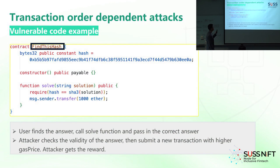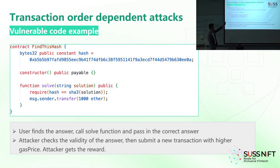So this contract name is FindThisHash. We have a hash here, and we're trying to get the string that results in this hash. De-hashing something is very difficult and requires tremendous computing power. For example, when a user solves this challenge, he can get 1,000 ETH.